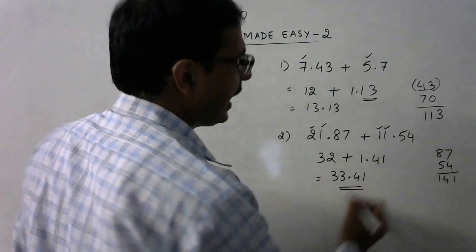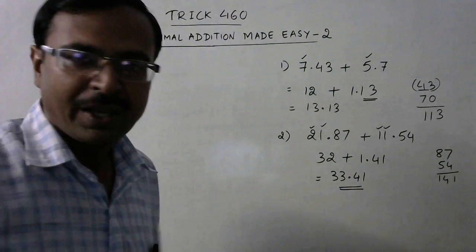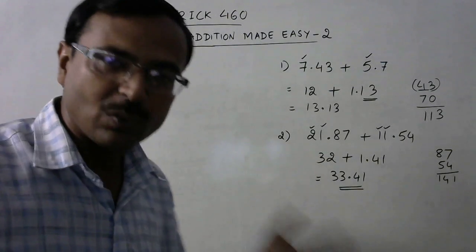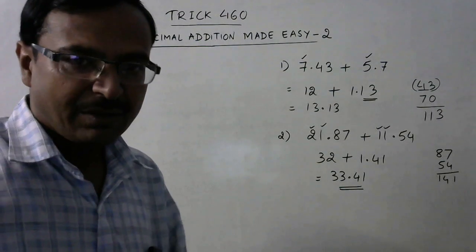So write it as 1.41. Now we can add it: 32 plus 1 is 33, and 0.41 will come as it is, so 33.41 is the answer. I am sure with the practice of 15 to 20 minutes, taking 20 to 30 questions like this and practicing it for half an hour, will enable you to save lot of time in decimal calculations.